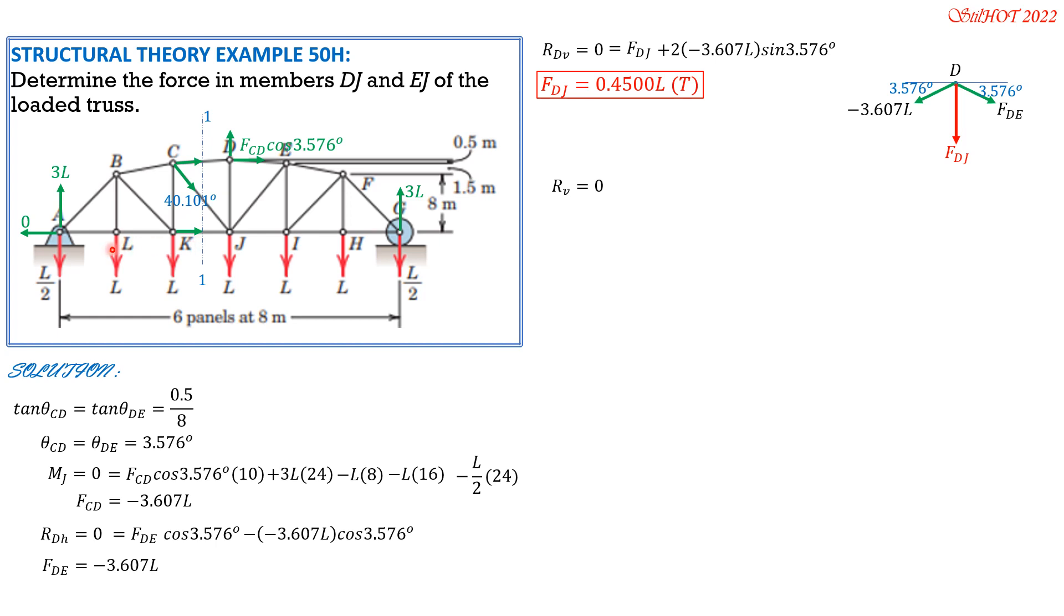So we have FCD, which is negative, it is upwards, but its sign is negative. So we'll consider 3L first. Then plus FCD, which is plus negative 3.607L, sine of 3.576, the vertical component. Then minus, because this is downward, FCJ cosine of 40.101 degrees, the vertical component of FCJ. Then minus L, minus L, minus L over 2. So take note that FCJ is the only unknown here. Solving for FCJ, transpose to the left, then compute the values to the right. FCJ is 0.3595L.